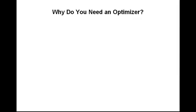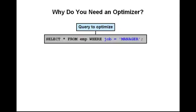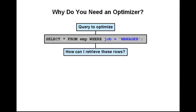This demo explains through a small example why a database optimizer is needed. Here is a simple query to optimize: we want to retrieve all employees that are managers. To answer that query, the optimizer needs to determine how to retrieve those records from the table.